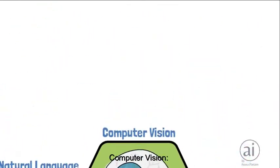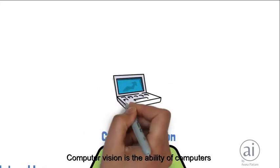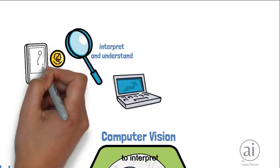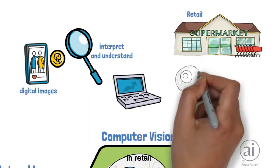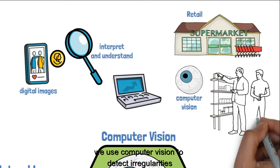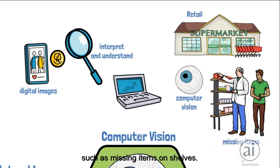Computer vision is the ability of computers to interpret and understand digital images. For example, in retail, we use computer vision to detect irregularities such as missing items on shelves.